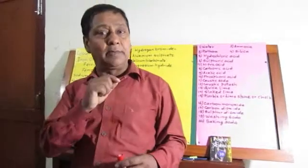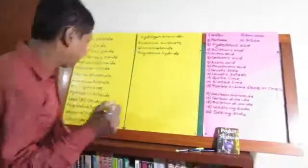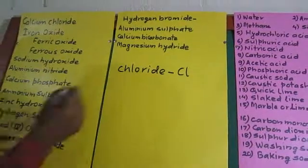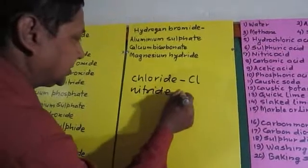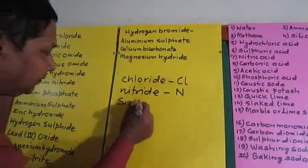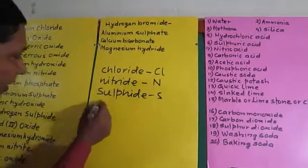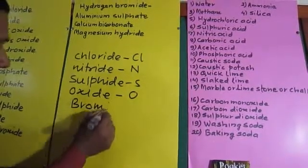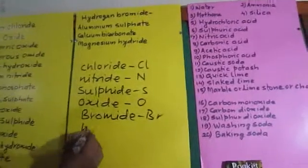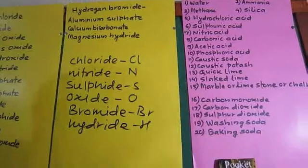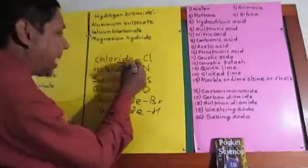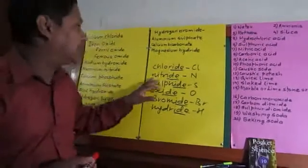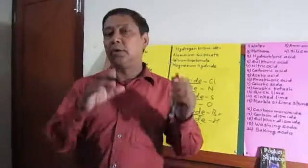Now, some facts related to the naming of compounds: the suffix '-chloride' means chlorine is combined; '-nitride' means nitrogen is combined; '-sulfide' means sulfur is combined; '-oxide' means oxygen is combined; '-bromide' means bromine is combined; and '-hydride' means hydrogen is combined. We have to remember that the '-ide' suffix represents a certain element being combined.